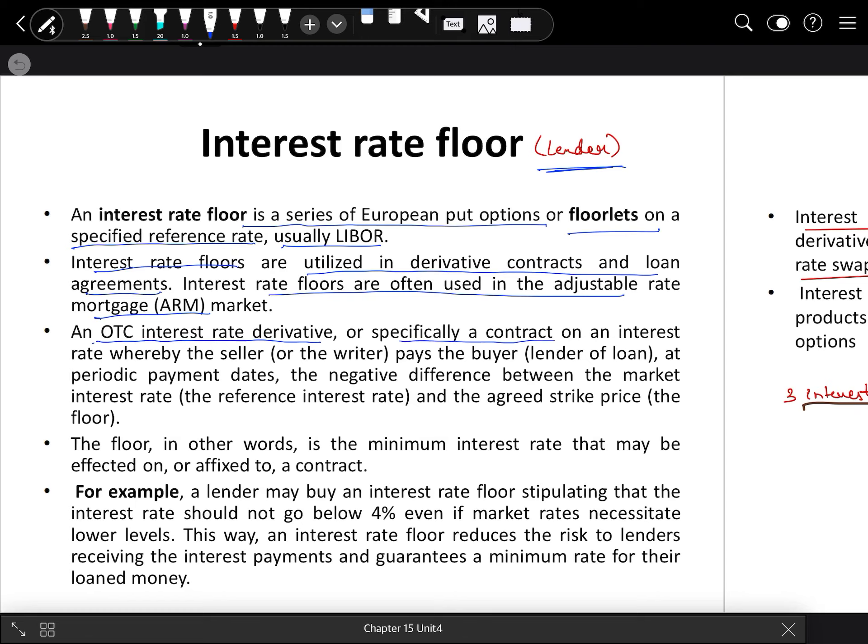An OTC interest rate derivative, or specifically a contract on an interest rate, whereby the seller or writer pays the buyer or lender of the loan at periodic payment dates the negative difference between the market interest rate. For example, if there's a strike rate of 10% and the market is 8%, that's minus 2%. The seller pays the buyer or lender the difference between the reference interest rate and the agreed strike price, which is the floor.